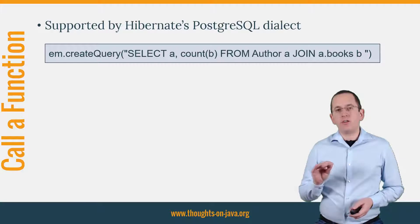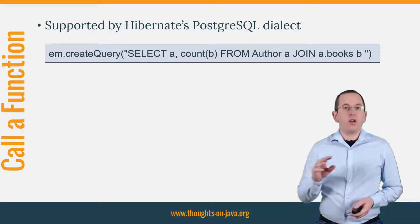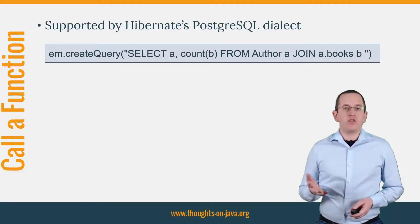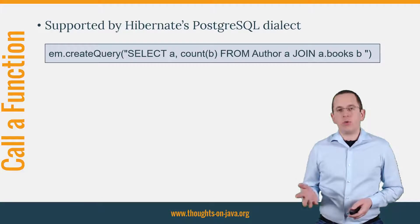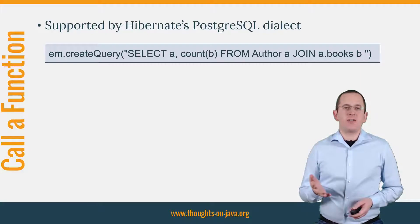It gets more complicated if it's a custom function or any other function that's not supported by Hibernate's PostgreSQL dialect. You then need to either create your own Hibernate dialect or use JPA's function function, which was introduced in JPA 2.1 and gives you a generic way to define a function call. Let's get into the IDE and take a closer look at it.